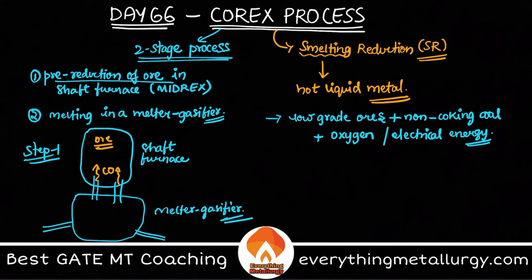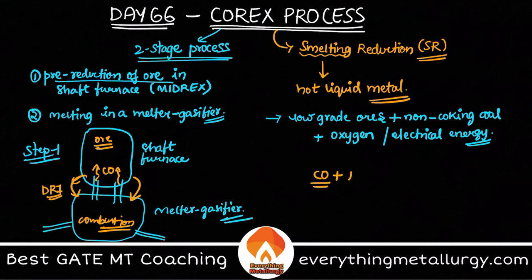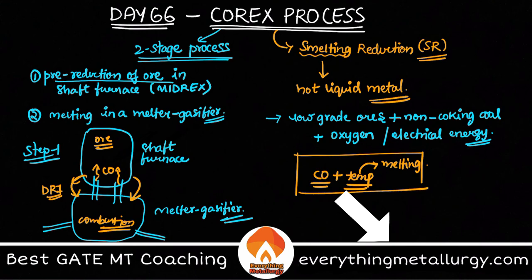In the shaft furnace on top, pre-reduction of ore takes place. Ore is added at the top, and the CO gas coming in reduces it to produce DRI. This DRI is then transferred from the upper shaft furnace to the lower melter gasifier — usually there is a screw mechanism; on an industrial visit to a COREX plant you can observe DRI screws transferring the DRI. This DRI is then melted in the melter gasifier because of the high temperatures generated by combustion, which provides both the reducing agent CO and the heat required for melting.